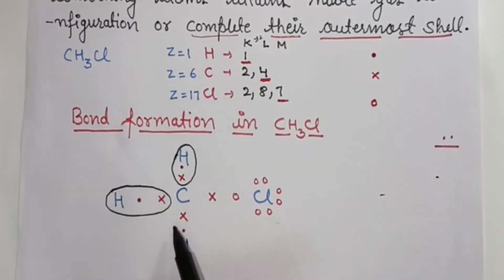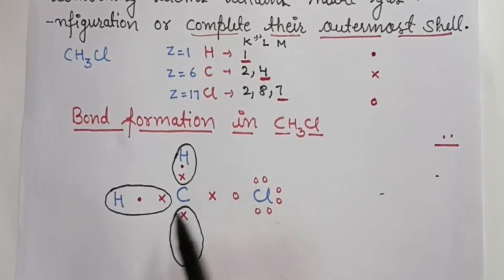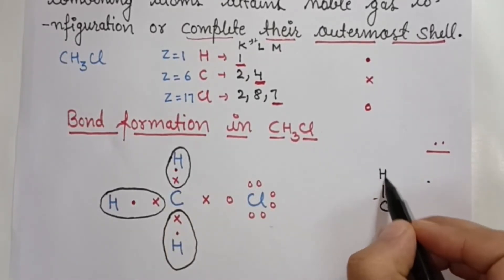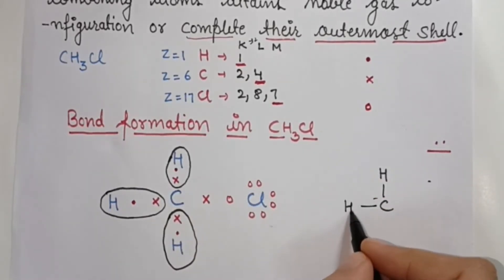Similarly, the other hydrogen atoms will also share with carbon to create covalent bonds. Here we have 1 bond, here 1 bond, here 1 bond by mutual sharing.